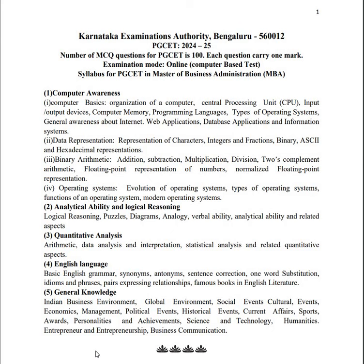The fifth section is general knowledge. We have to concentrate on the Indian business environment, global environment, social events, cultural events, economics, management, political events, historical events, current affairs, sports, awards, personalities and achievements. It's purely about memorizing data and concepts. Also covers science and technology, humanities, entrepreneurship, and basic business communication. This is the complete syllabus — very few days are left, so stay focused. We will post more videos on how to prepare for the MBA exam. Stay tuned, thank you.